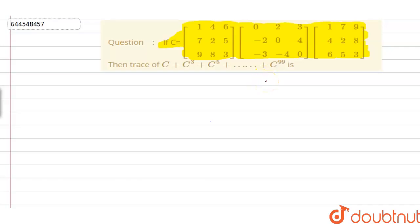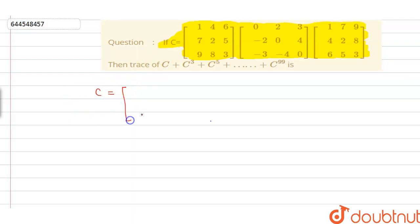In the given problem, we have a matrix C which is the product of three matrices, and we have to find the trace for the matrix C plus C³ plus C⁵ and so on till C⁹⁹. First of all, we have to learn what is the trace for matrix C, so we need to resolve this into a simplified form.